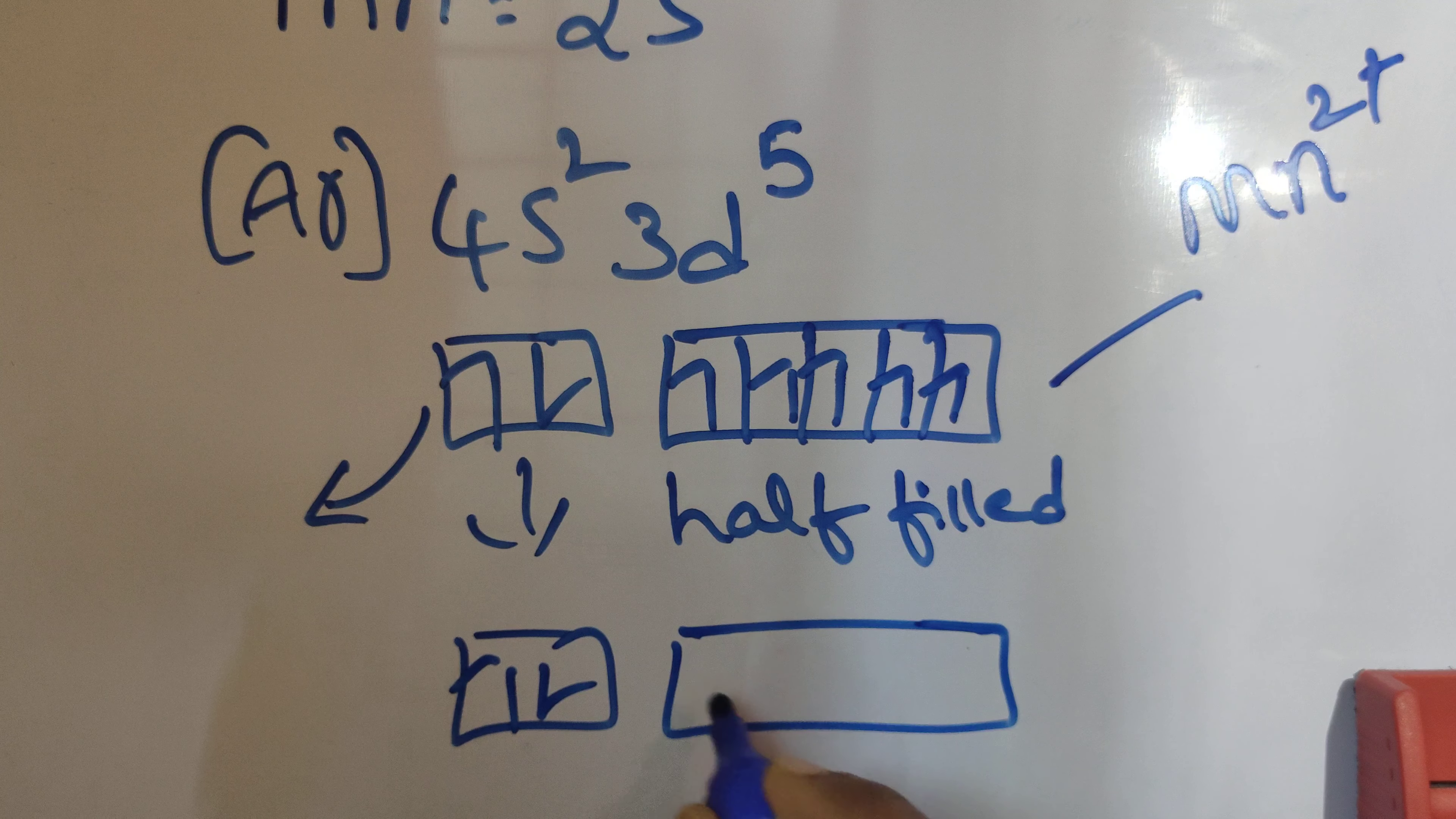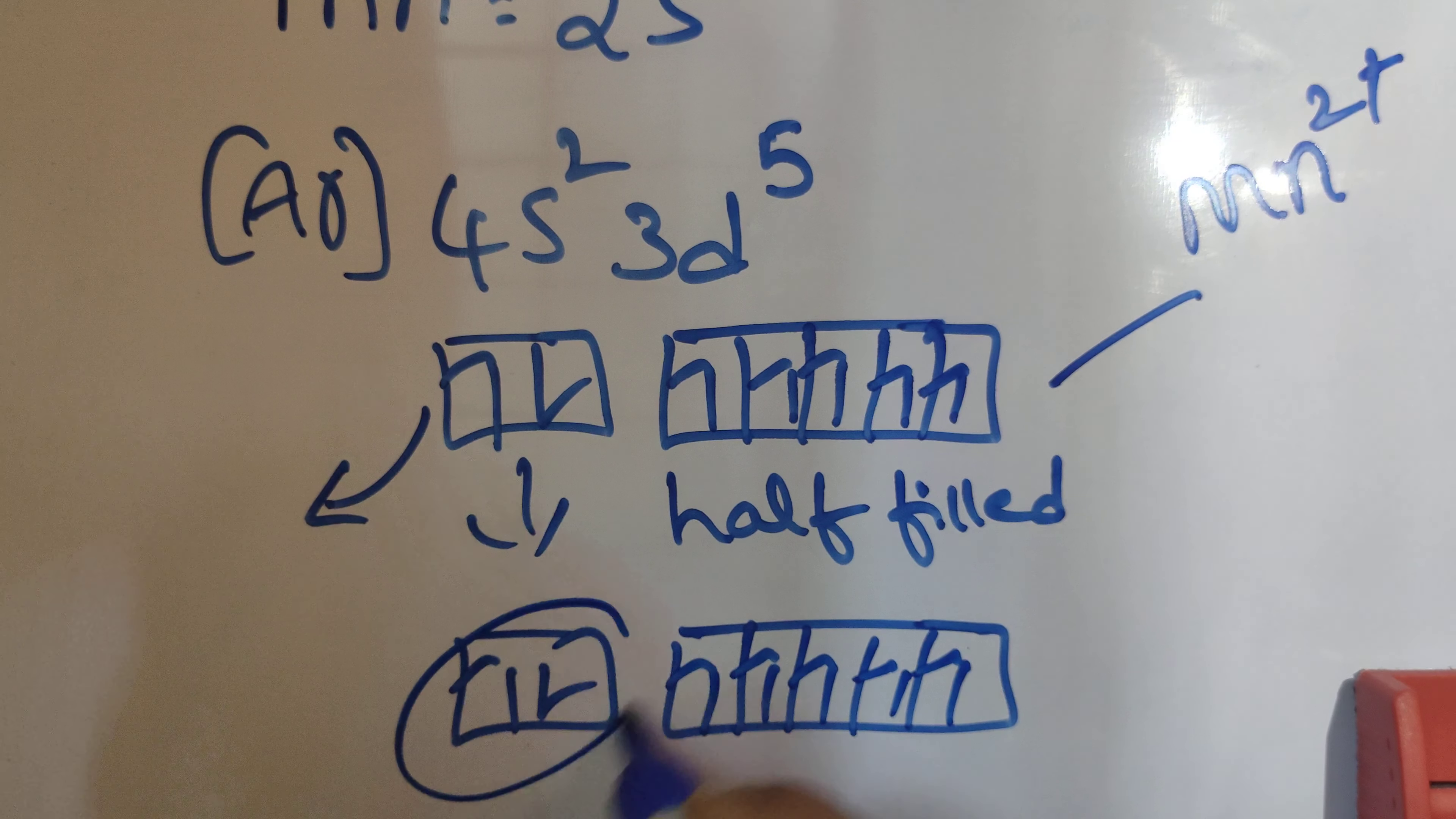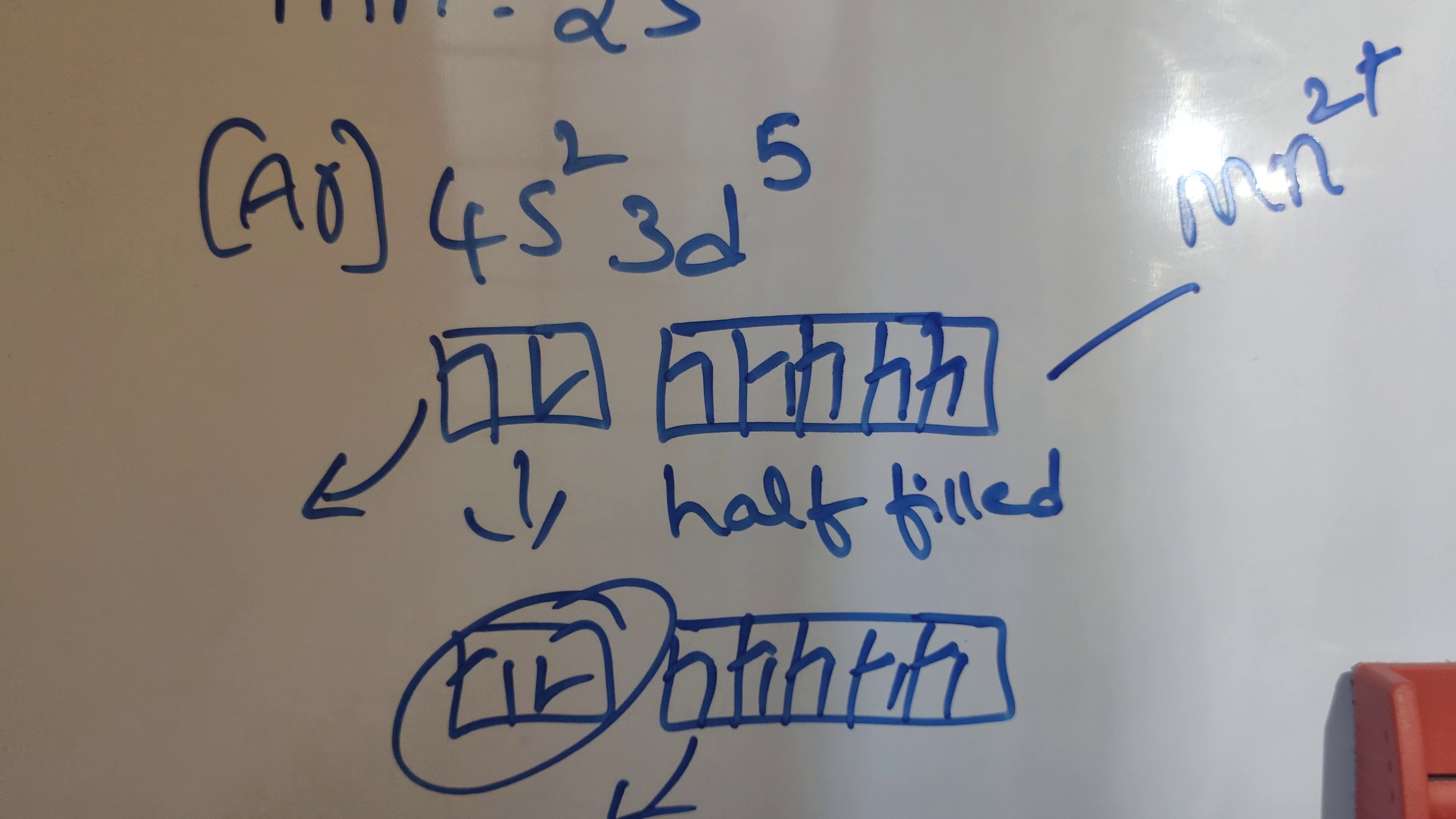In the case of Mn³⁺, what are we doing? We are removing these two and we are removing another electron from the d orbital. So there is no half-filled and there is no fully filled.